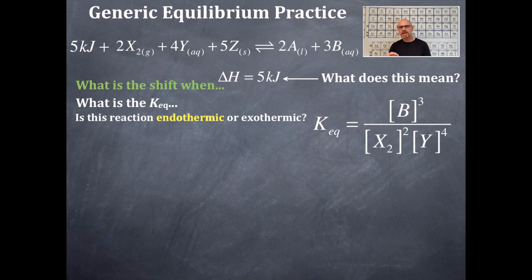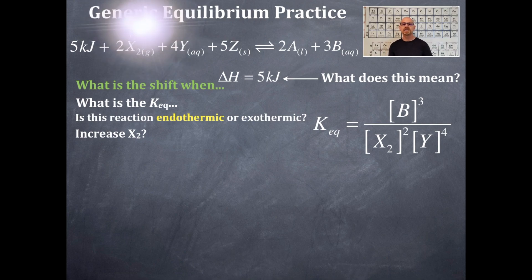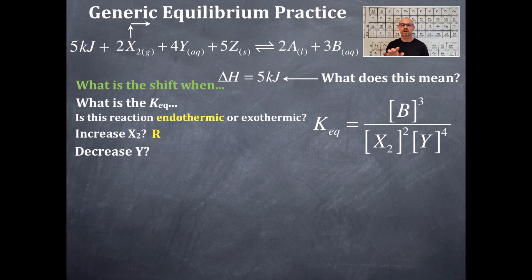So what is the shift when you increase X2? Take a look at that equilibrium equation. We're going to increase the X2. Now I have too much X2, I need to get rid of it. So I'm going to shift it to the right to get rid of it. Now decreasing Y. Find Y in that equilibrium equation, and we're going to decrease it. Now I don't have enough Y, I need to make more. So I'm going to shift it towards itself to make more. That's a shift to the left.